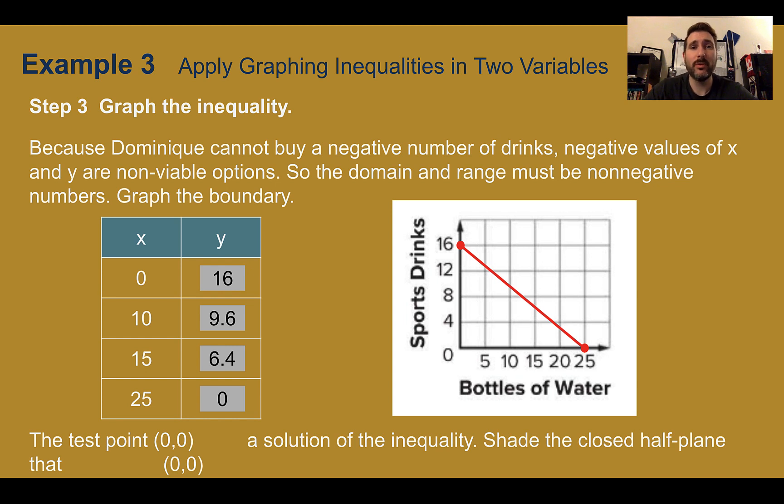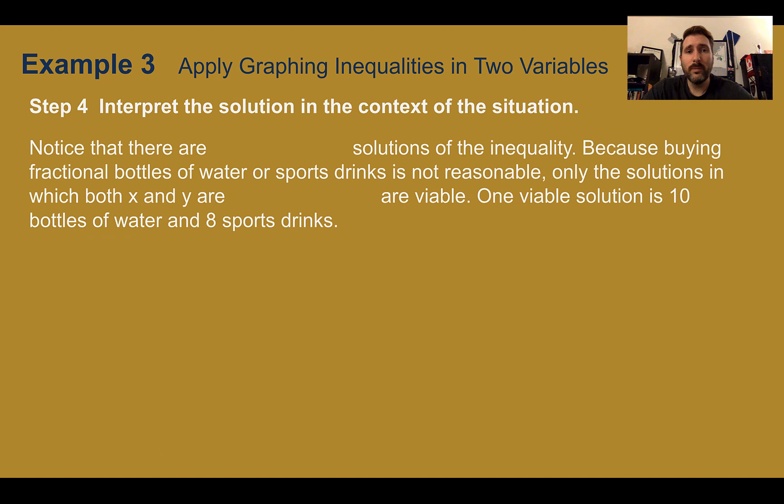Let's use a test point like we did before to figure out where to shade. So (0,0), not on the line this time. If she buys 0 of each, would she be able to spend less than $20? Yes, definitely. So (0,0) is part of the solution, meaning we're going to shade where (0,0) would be, which is under the line. Now, what does this help us figure out in a context? The shaded area is where all the solutions are. So there are many solutions. There's many places we can put in the shaded area, but you can't buy fractions of water bottles or parts of sports drinks. So your solutions are only going to be those coordinates that are whole numbers within the shaded area.